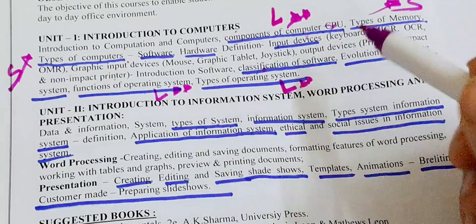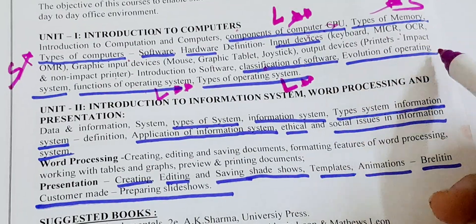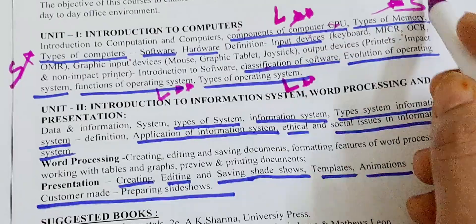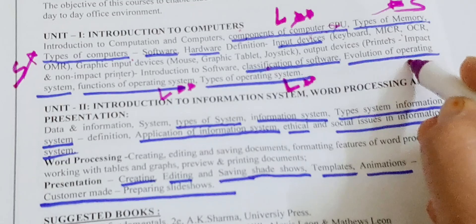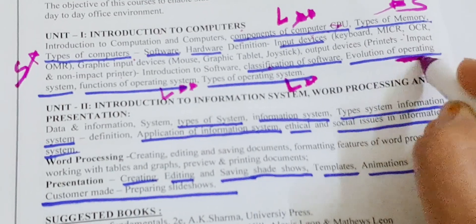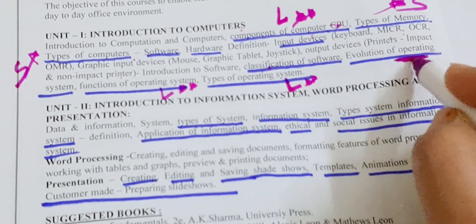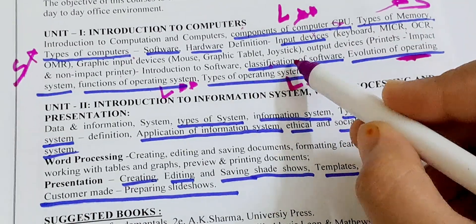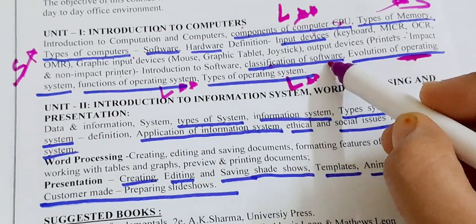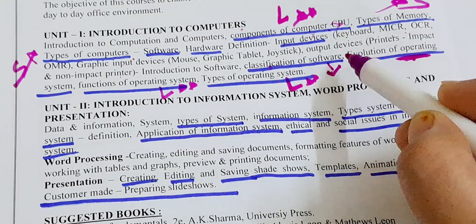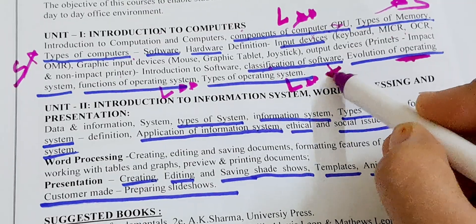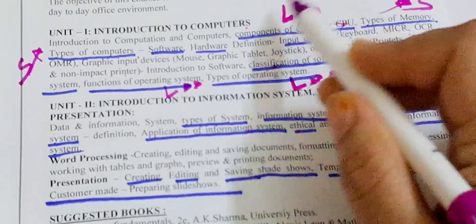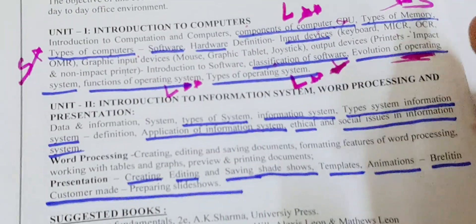Another topic is Evolution of Operating System — learn this one last, after covering all the other topics, as it is not as important as the rest. Classification of Software is also a lower-priority question; learn these two last, after finishing all the other topics first.